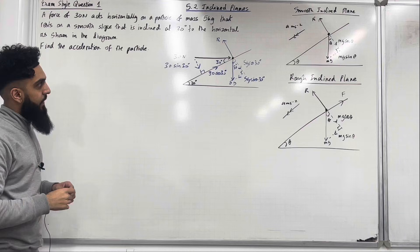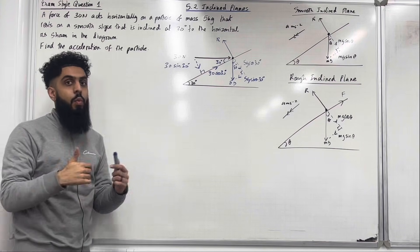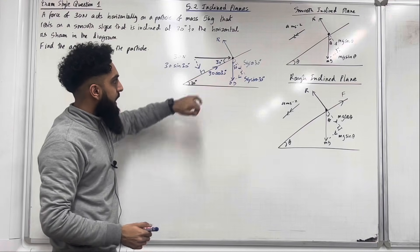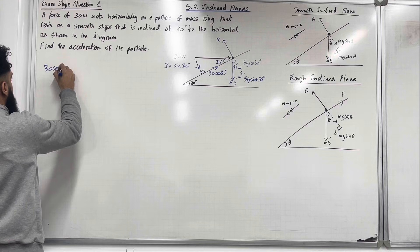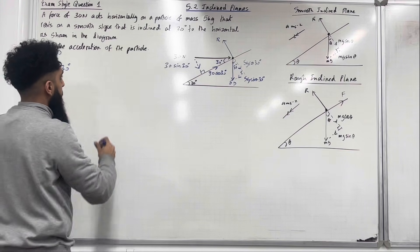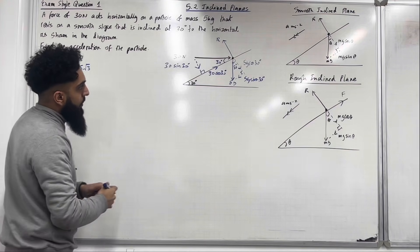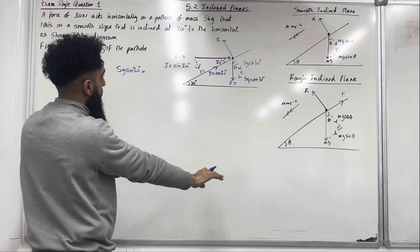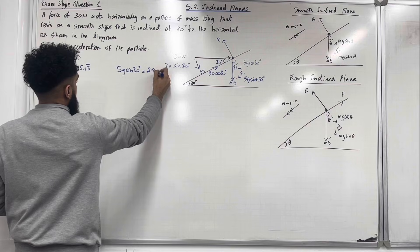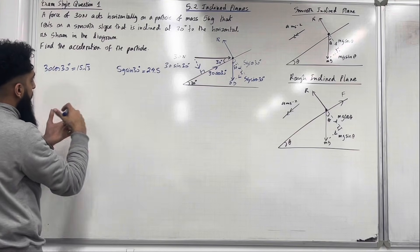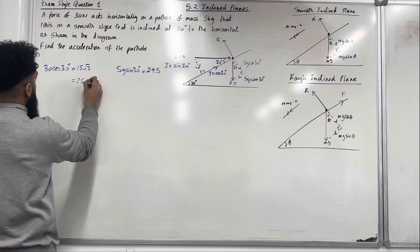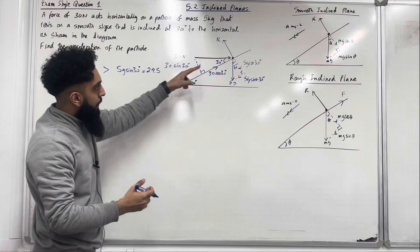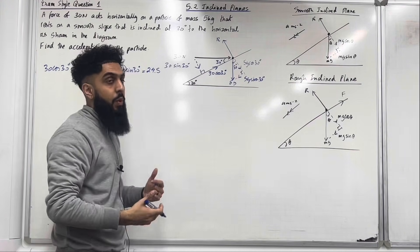In the question we are not told if the particle moves up or down the plane, so we decide by comparing parallel forces. We have 30 cos 30 degrees, which equals 15 root 3, approximately 25.98. We also have 5g sin 30, which equals 24.5. Since 25.98 is greater than 24.5, the force up the plane is greater than the force down the plane, hence the particle will accelerate up the plane.